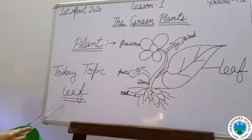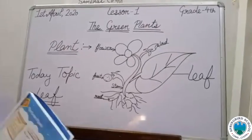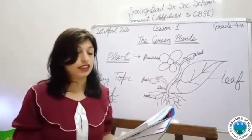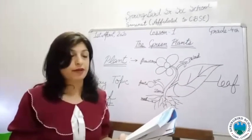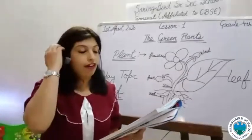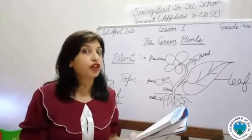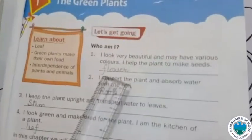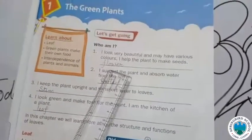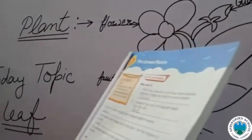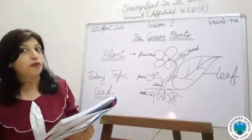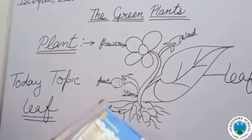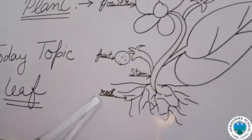Before going to today's topic, I will ask you some questions. Listen carefully. 'I look very beautiful and may have various colors. I help the plant to make seeds.' What is the answer? Yes — flowers! Next question: 'I support the plant and absorb water from the soil.' That is your roots.